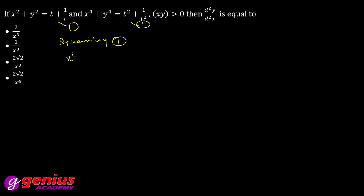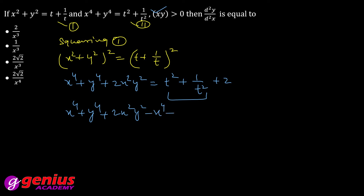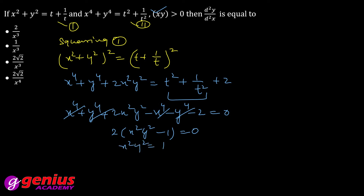Expand karne par: x⁴ + y⁴ + 2x²y² = t² + 1/t² + 2. From equation 2, x⁴ + y⁴ = t² + 1/t², so substituting: 2x²y² = 2, hence x²y² = 1, and therefore xy = 1 (since x, y > 0). This satisfies the given condition xy > 0.